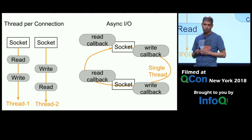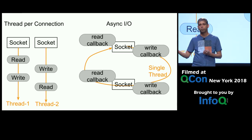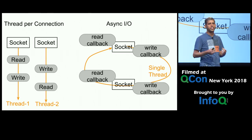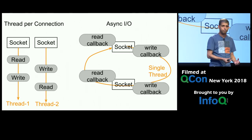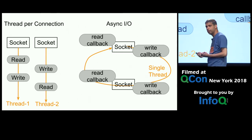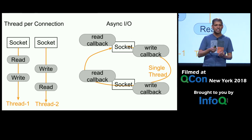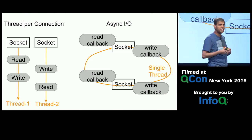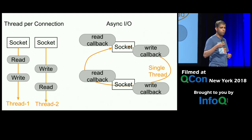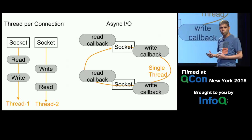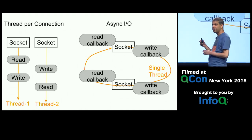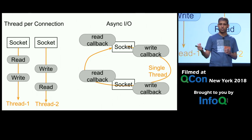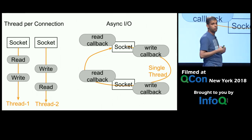AsyncIO follows a different programming model. It uses operating system provided multiplexing IO primitives like kqueue, epoll, or IO completion ports on Windows to register read and write callbacks for all those open connections on a single thread. When any of those connections is ready to do a read or write operation, its corresponding callback gets invoked on the same thread. So you no longer need as many threads as you have open connections, and that way it scales much better. The trade-off is your application is somewhat more complicated now because you as a developer are responsible for keeping track of the state of all those connections inside your code. You cannot rely on the thread stack to do so. You typically do that by using some kind of event or state machine inside your code.